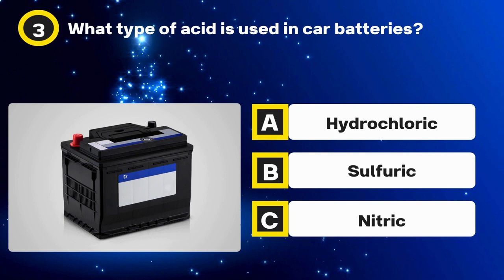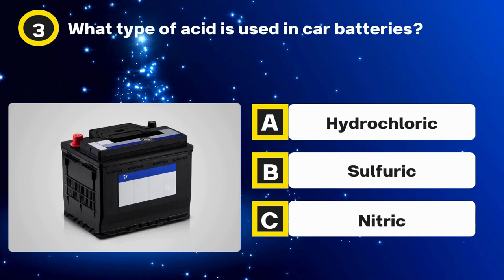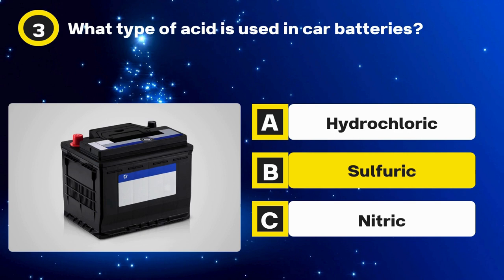Question 3. What type of acid is used in car batteries? Options: Hydrochloric, Sulfuric, Nitric. The answer: Sulfuric.